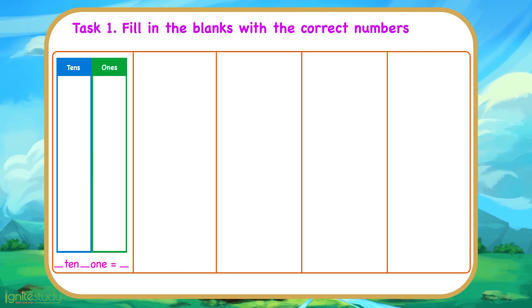First, we have 1 ten and 0 ones. So, 1 ten and 0 ones is 10.